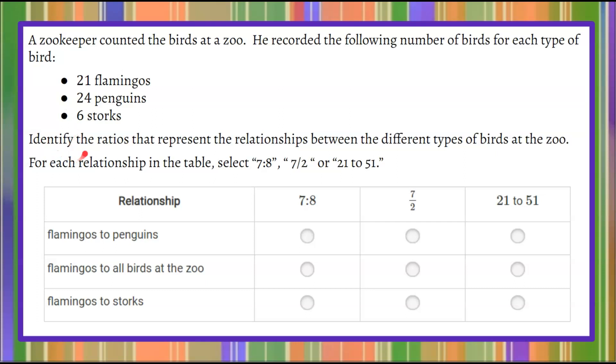We are asked to identify the ratios that represent the relationships between the different types of birds at the zoo. For each relationship in the table, we're to select 7 to 8, 7 to 2, or 21 to 51.